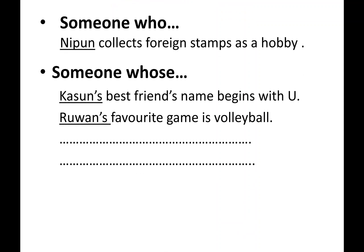I'll give you an example. Someone who, Nippon, collects foreign stamps as a hobby. Someone whose best friend's name begins with U. Activity 2 example: Rowan's favourite game is volleyball.